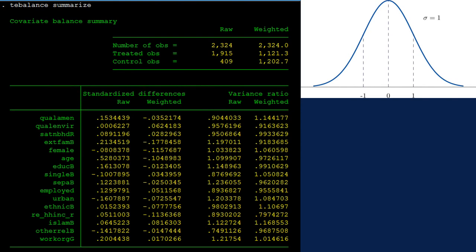You can ask for the table for covariate balance summary using TE balance summarize command. If the covariate is balanced, the mean difference between the treated and the controlled will be 0, and the variance of the difference will be 1, which is the standard normal distribution.